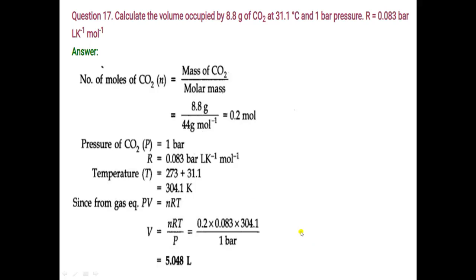Next question: calculate the volume occupied by 8.8 grams of carbon dioxide at 31.1 degree Celsius and 1 bar pressure. Value of gas constant is given as 0.083 bar·L·K⁻¹·mol⁻¹. We have to find out volume using the ideal gas equation PV = nRT, where n = given mass divided by molecular mass.